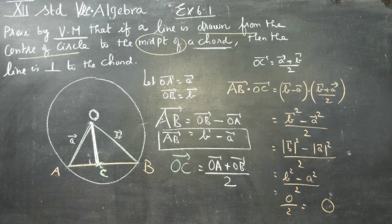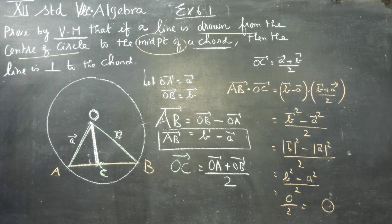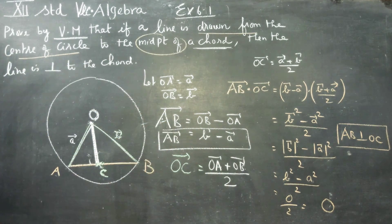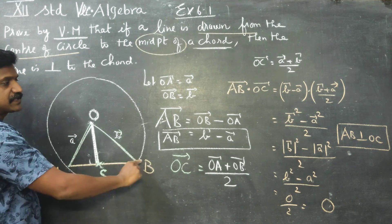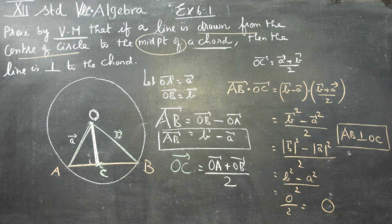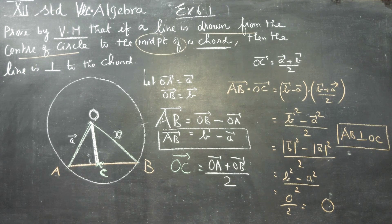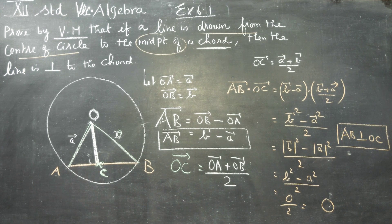AB · OC = 0, so AB is perpendicular to OC. OC is the line from the center of the circle to the chord AB. Therefore AB is perpendicular to OC. We applied dot product to show that the line from the center of the circle to the midpoint of the chord is always perpendicular to the chord. Thank you.